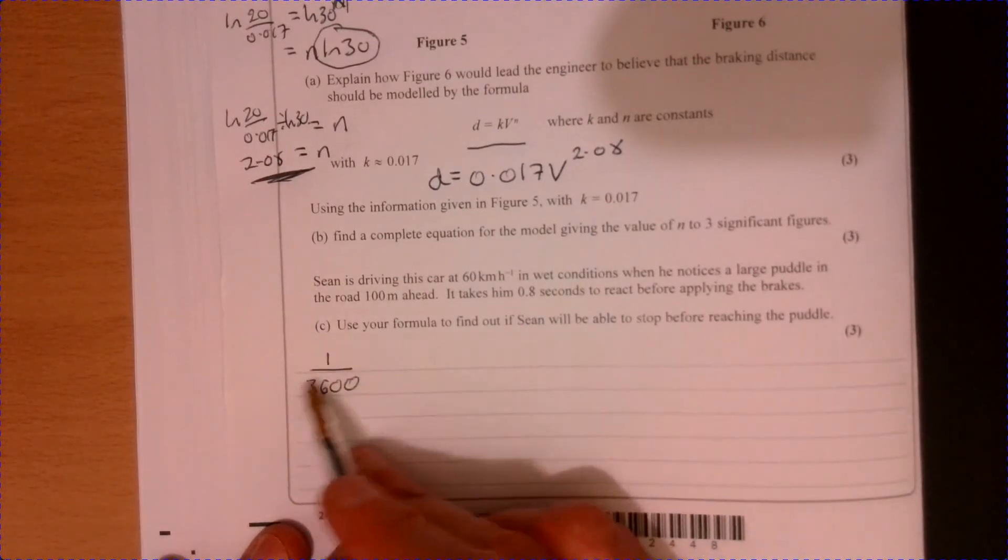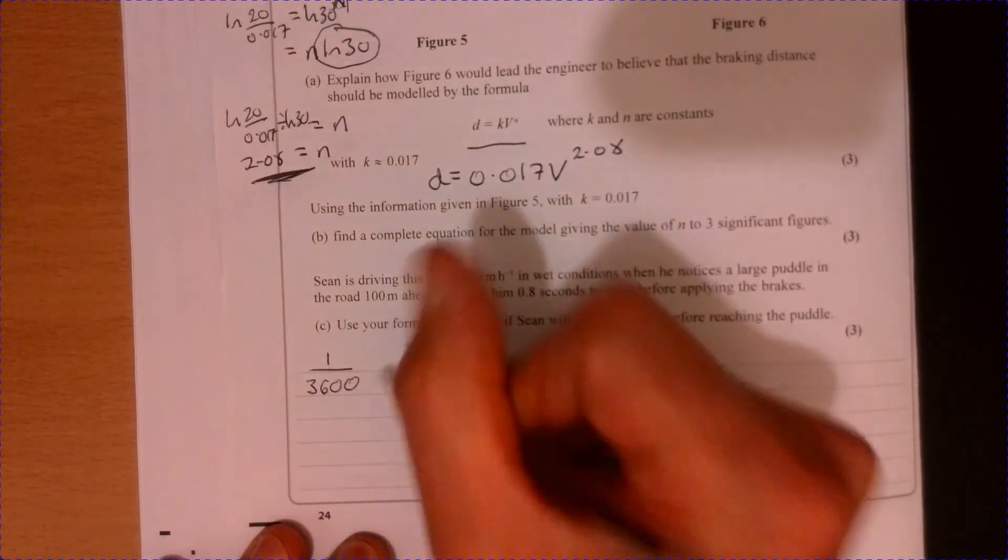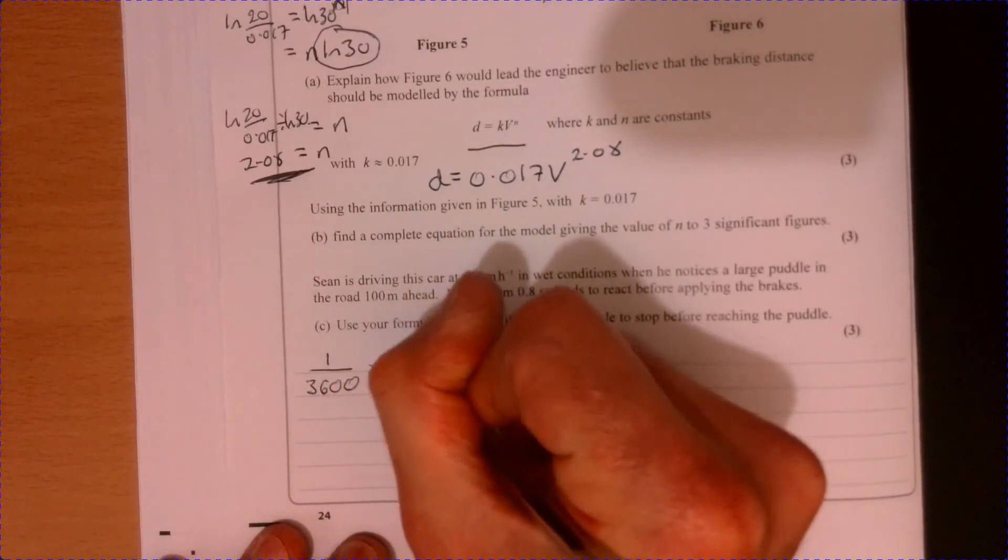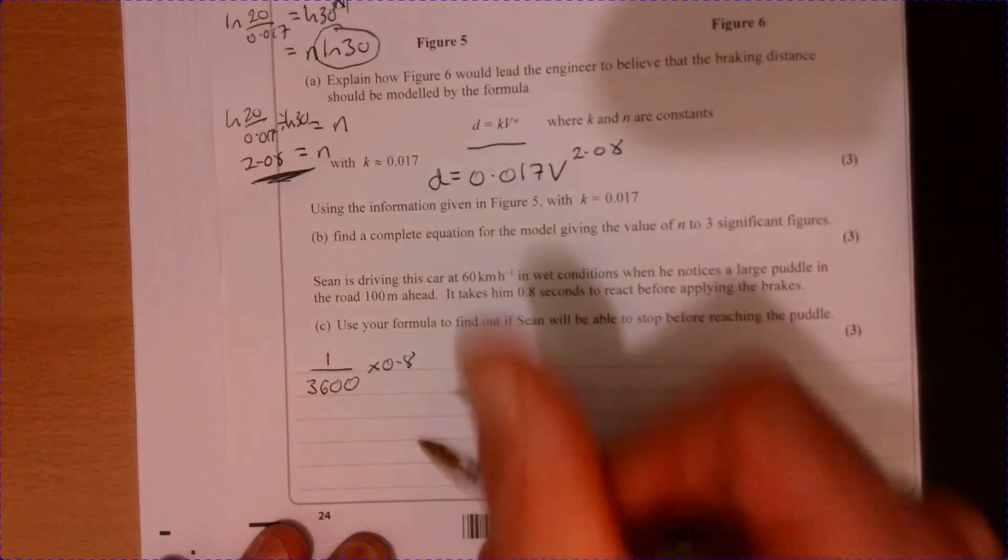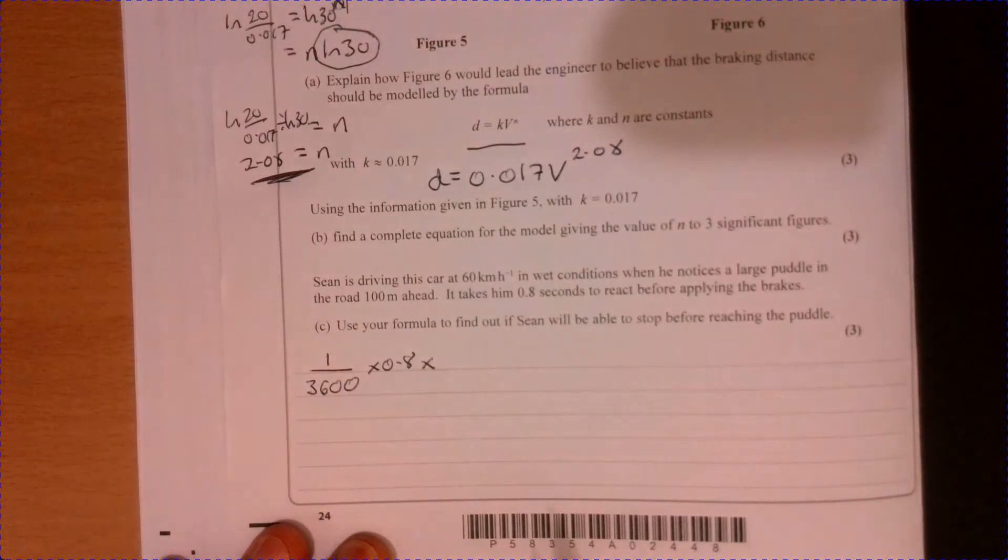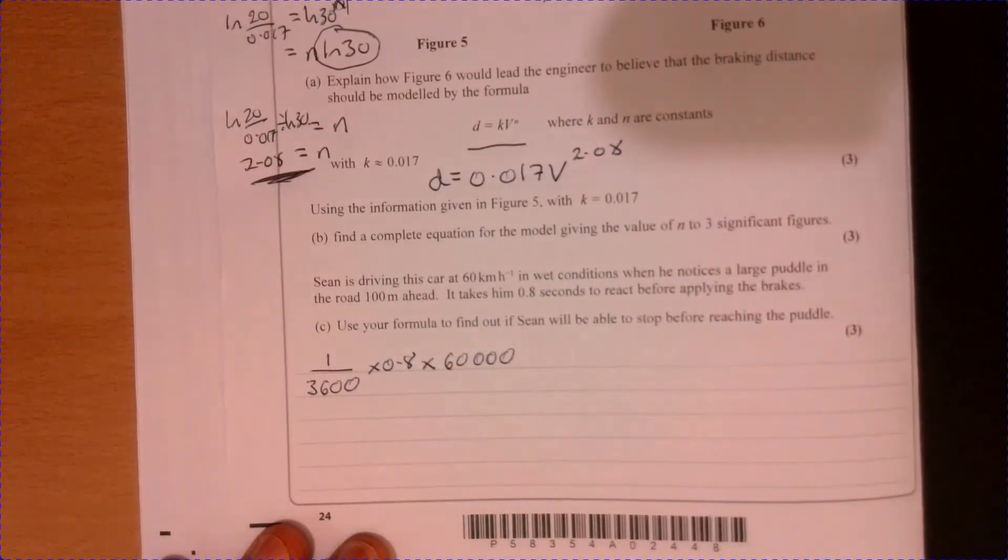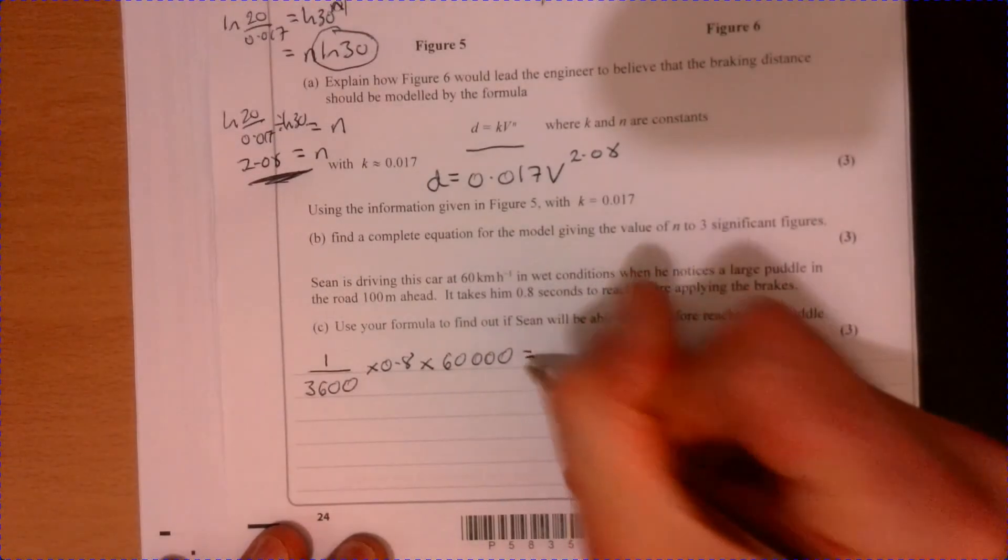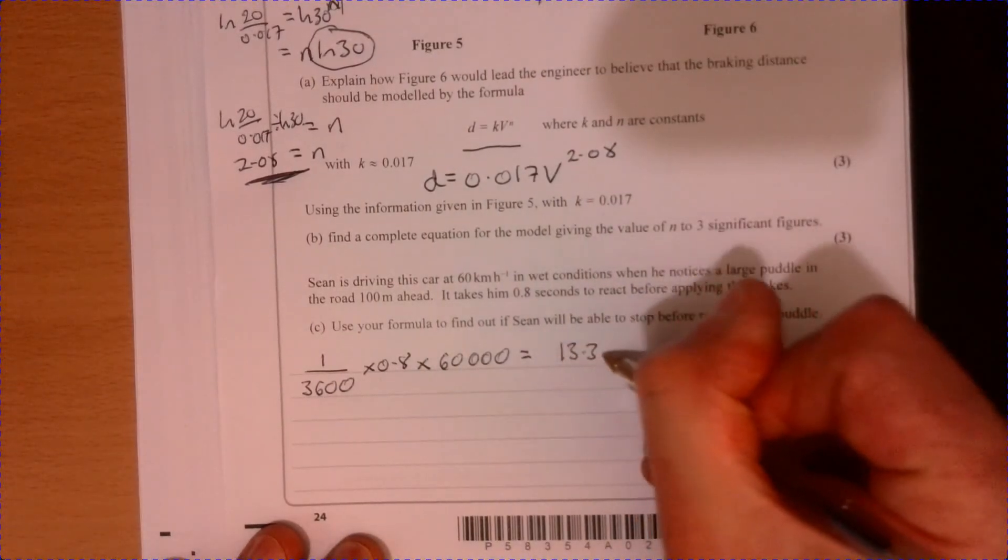So 1 over 3600, because there's 3600 seconds in an hour, we've got 0.8 of a second, so times that by 0.8, and then because the question's talking about meters, I'm going to times that by 60,000. That'll tell me how far Sean travels in that 0.8 seconds. If you do that, that gives me 13.3 meters.